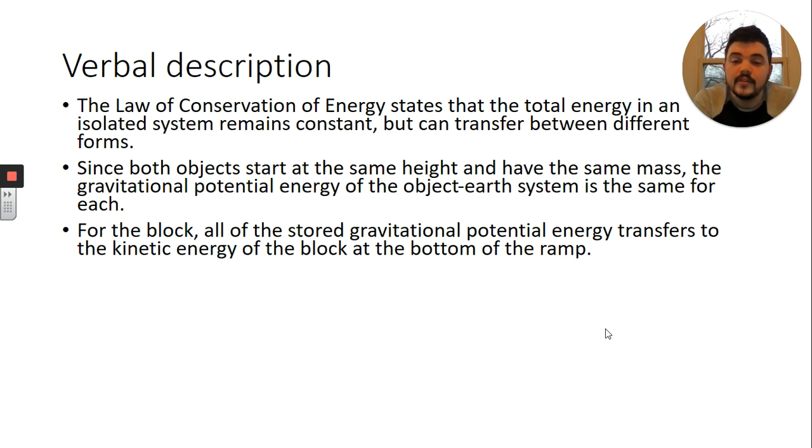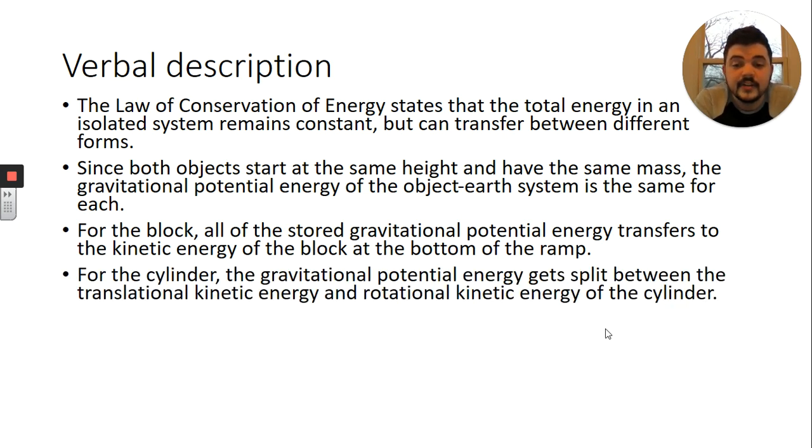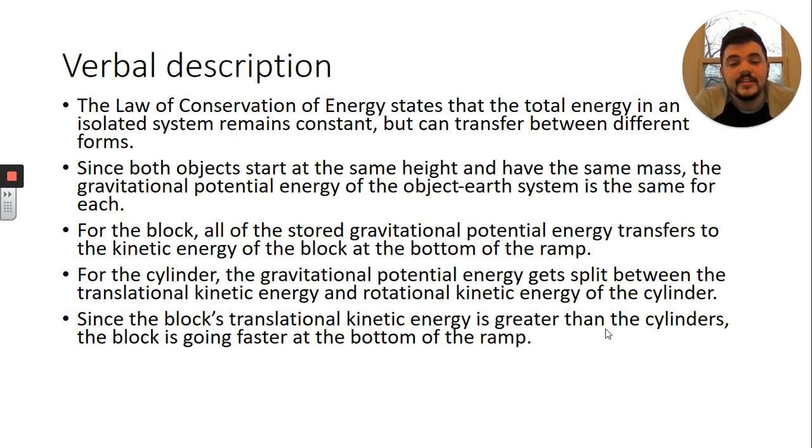For the block, all of the stored gravitational potential energy transfers into the kinetic energy of the block at the bottom of the ramp. For the cylinder, the gravitational potential energy gets split between the translational kinetic energy and the rotational kinetic energy of the cylinder. Since the block's translational kinetic energy is greater than the cylinder's, the block is going to be faster at the bottom of the ramp.